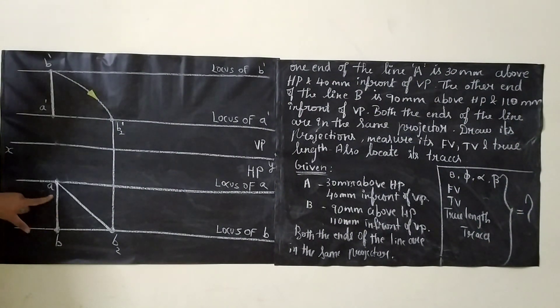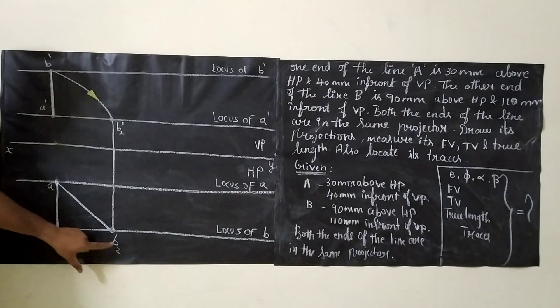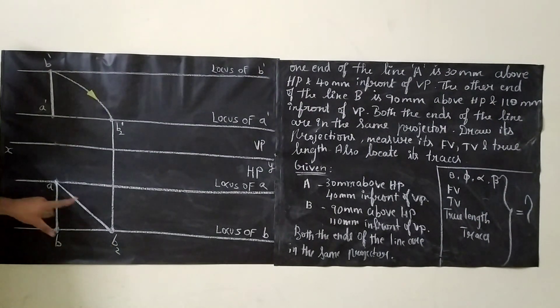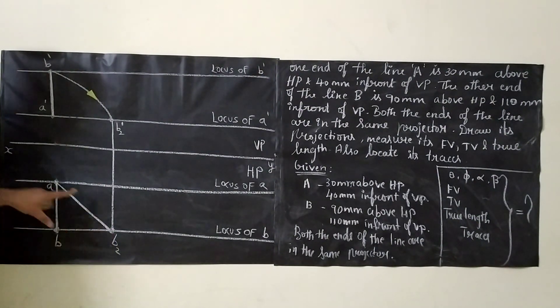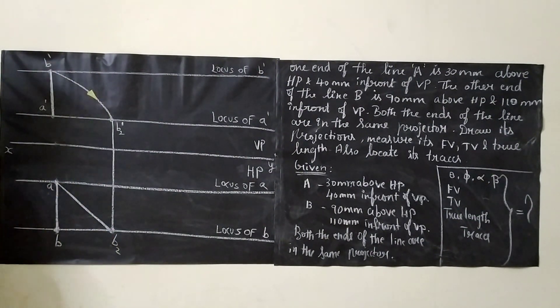Now join A' and B2. So A'B2 will be your true line and AB is your top view.